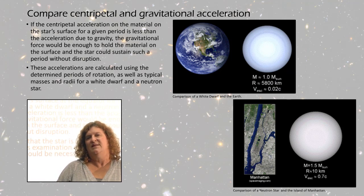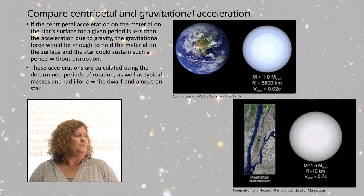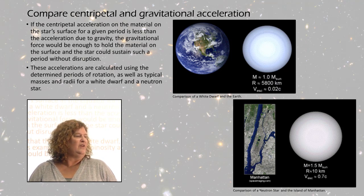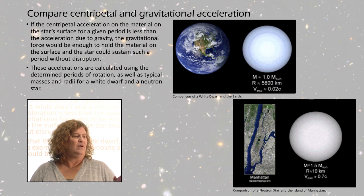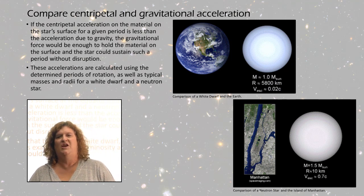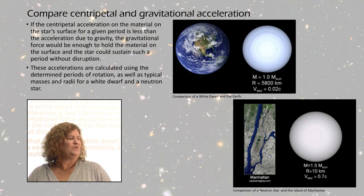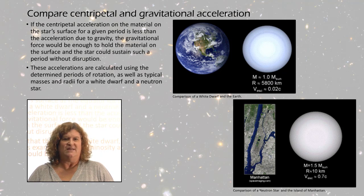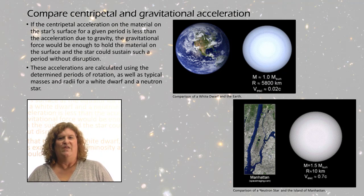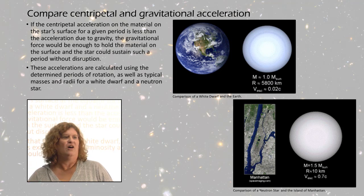Then we're going to look at the centripetal acceleration on the surface of these stars at the equator. You're using the spin periods you found in the light curves and the radius for a white dwarf and for a neutron star to calculate the centripetal acceleration. If the centripetal acceleration is less than the acceleration due to gravity, then the force of gravity would be enough to hold that star together so matter doesn't fly off.